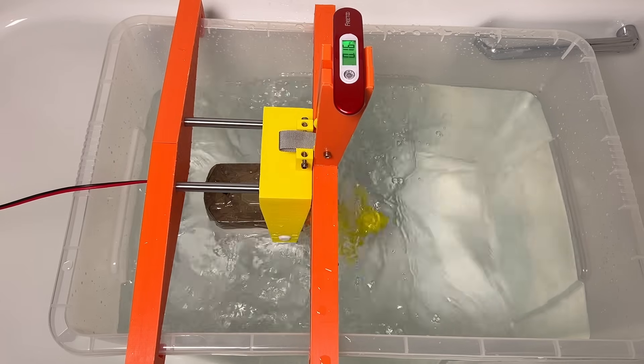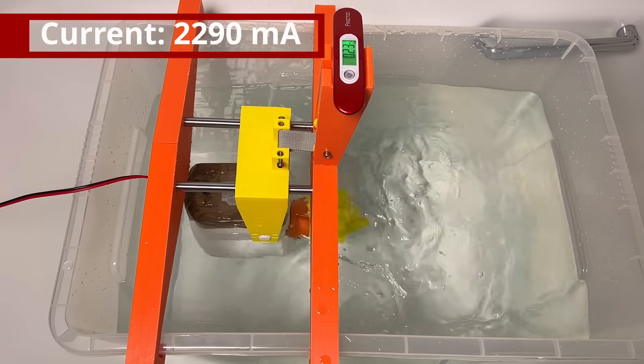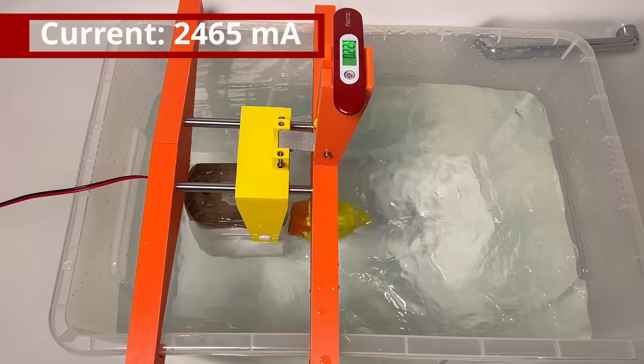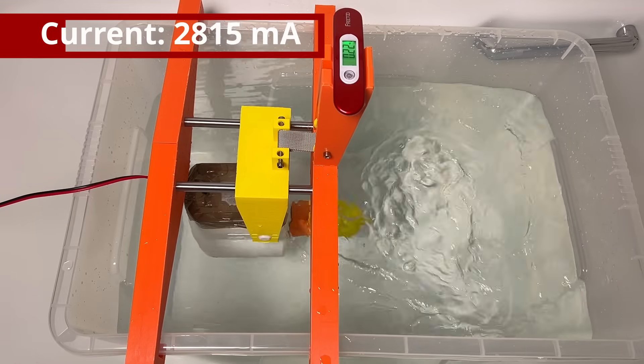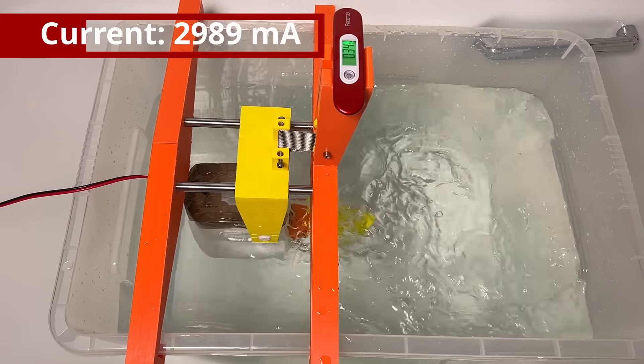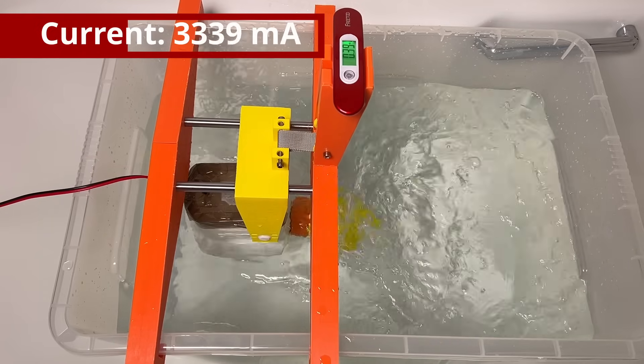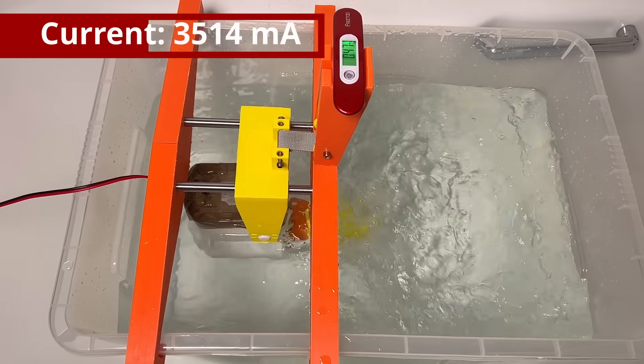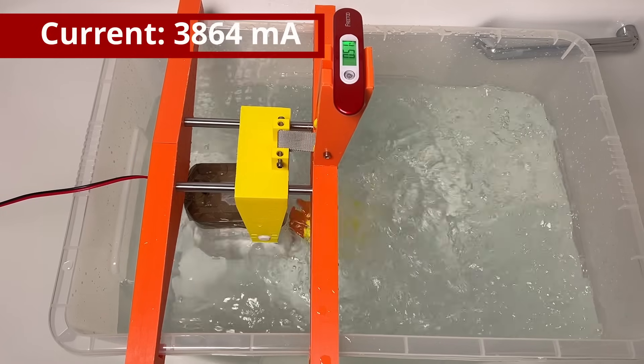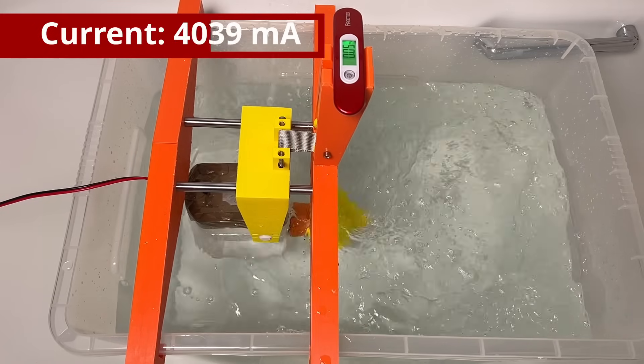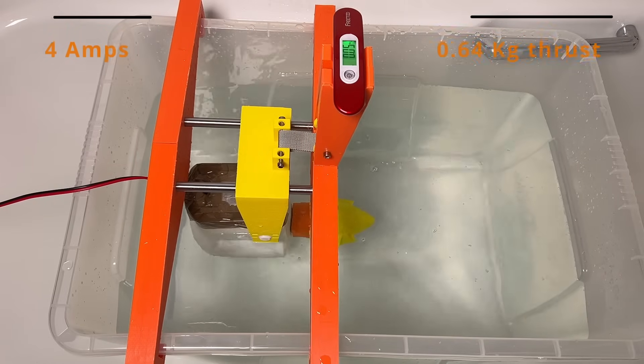Oh, wrong direction. Let's reverse the polarity. That's better. Magnetic gear loses synchronization around 4 amps. I'm going to take the max thrust to be about 0.64 kilograms.